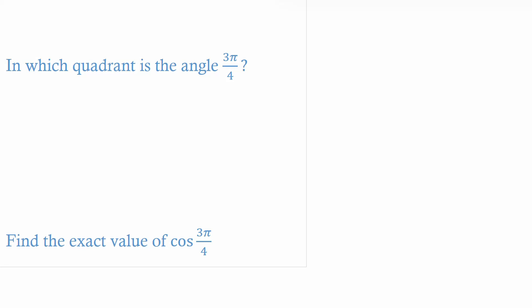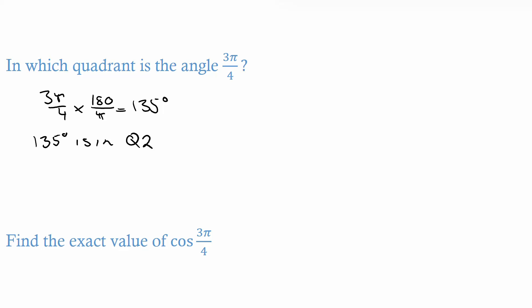Which quadrant is the angle 3π/4 in? The simplest way is to convert to degrees: 3π/4 times 180 over π gives 135 degrees. I know 135 degrees is in quadrant 2. If degrees are how you prefer to work, go for it — I just find it easier since we've been working with degrees for so long.